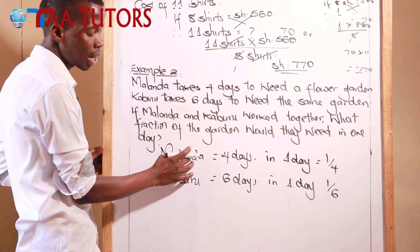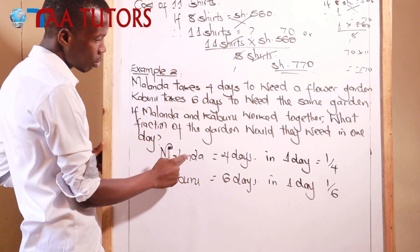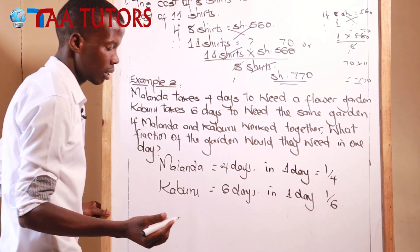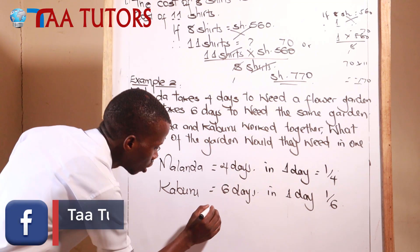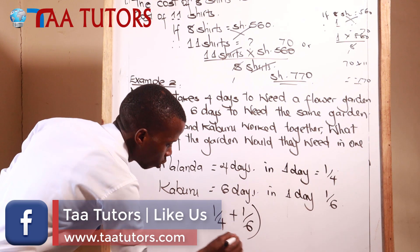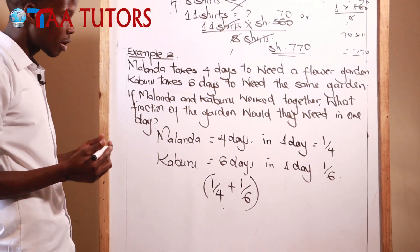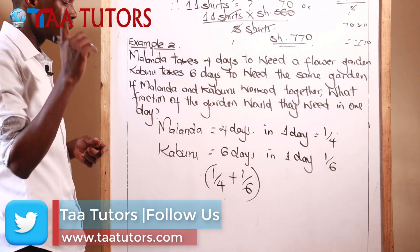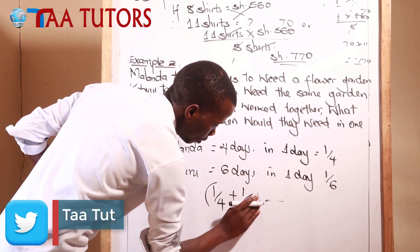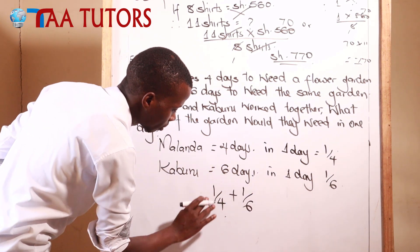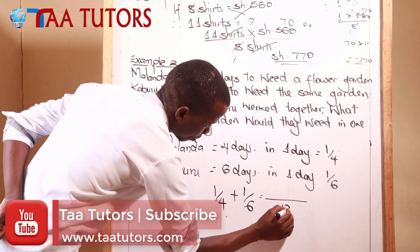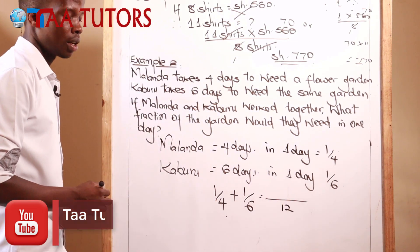When these people are working together, what is the fraction they are going to weed in one day? You add Malanda's fraction plus Kaburu's fraction: 1/4 plus 1/6. To add these fractions, we look at the LCM. The LCM of 4 and 6 is 12.